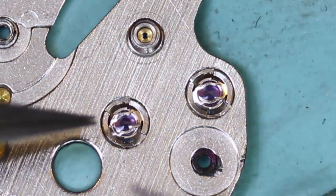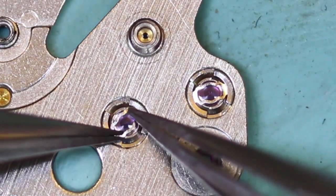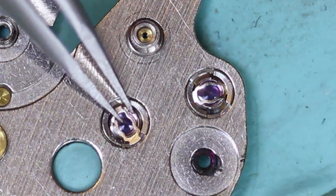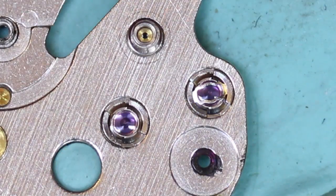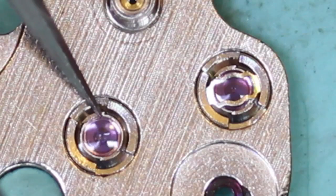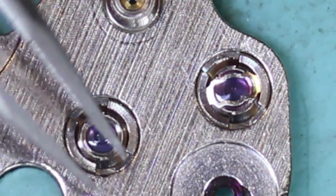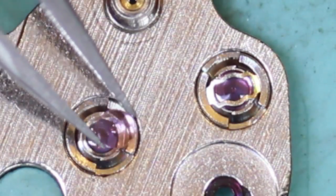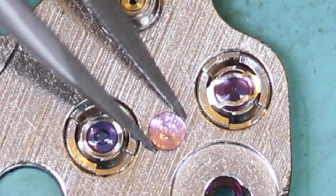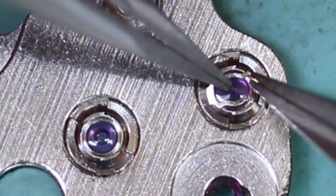So removing the shock springs is a fairly straightforward job. Two pairs of tweezers, just turn the spring ninety degrees and out it pops. Carefully take it away. The endstone doesn't have a setting or mount on the balance, so it's literally just taking off the endstone. And you can see the oil that's on this endstone is fairly intact. But we'll continue and take out the other endstone.